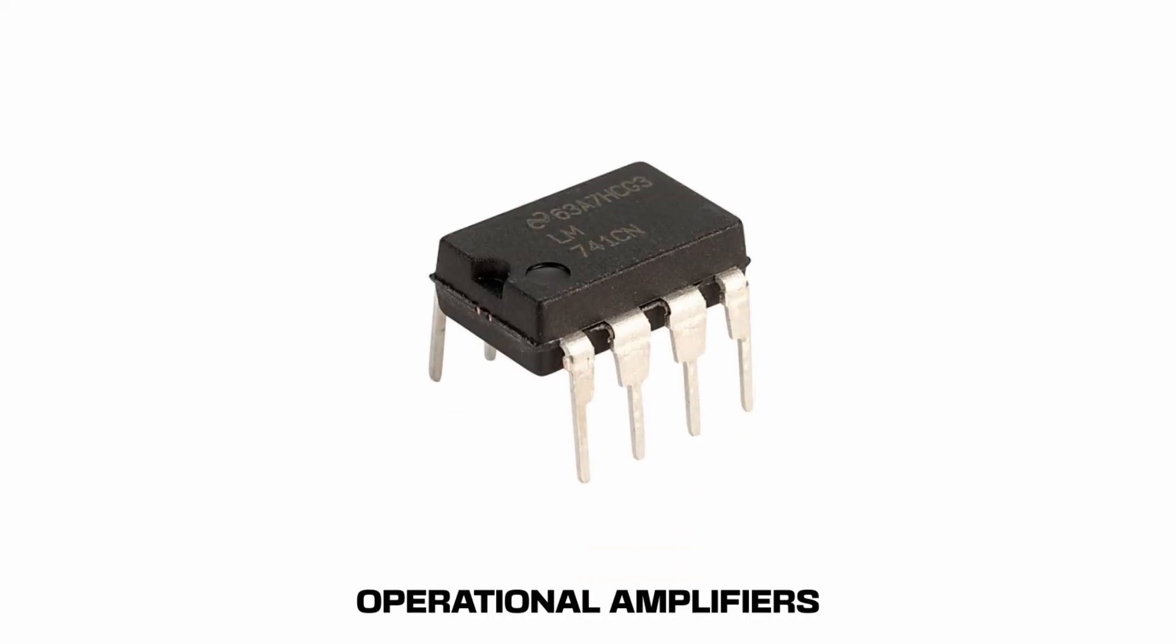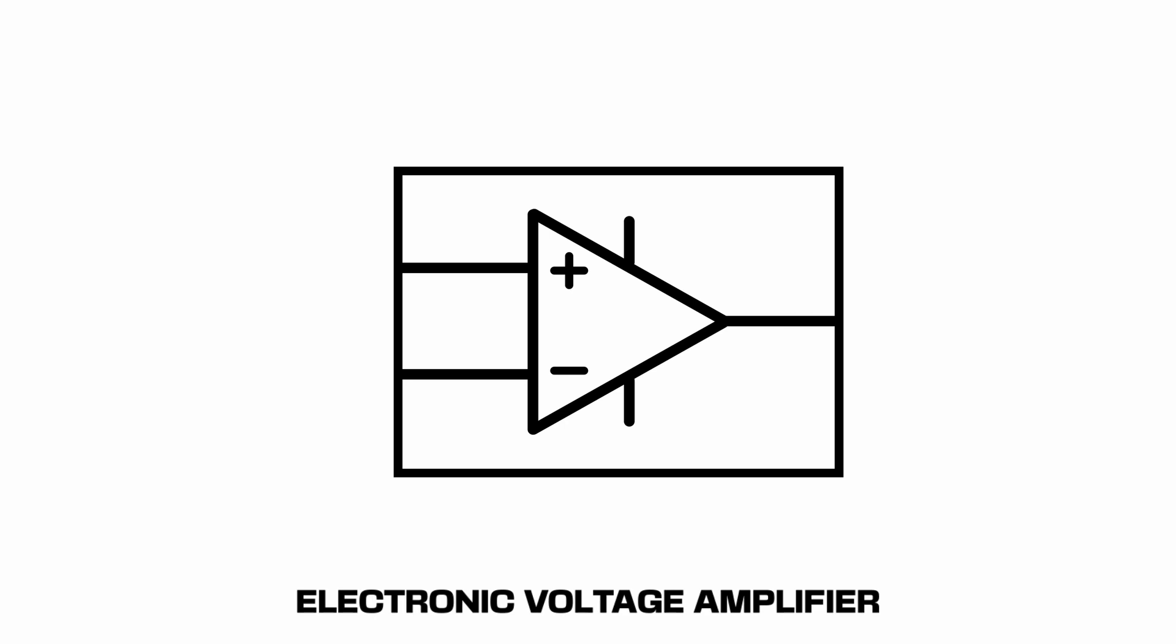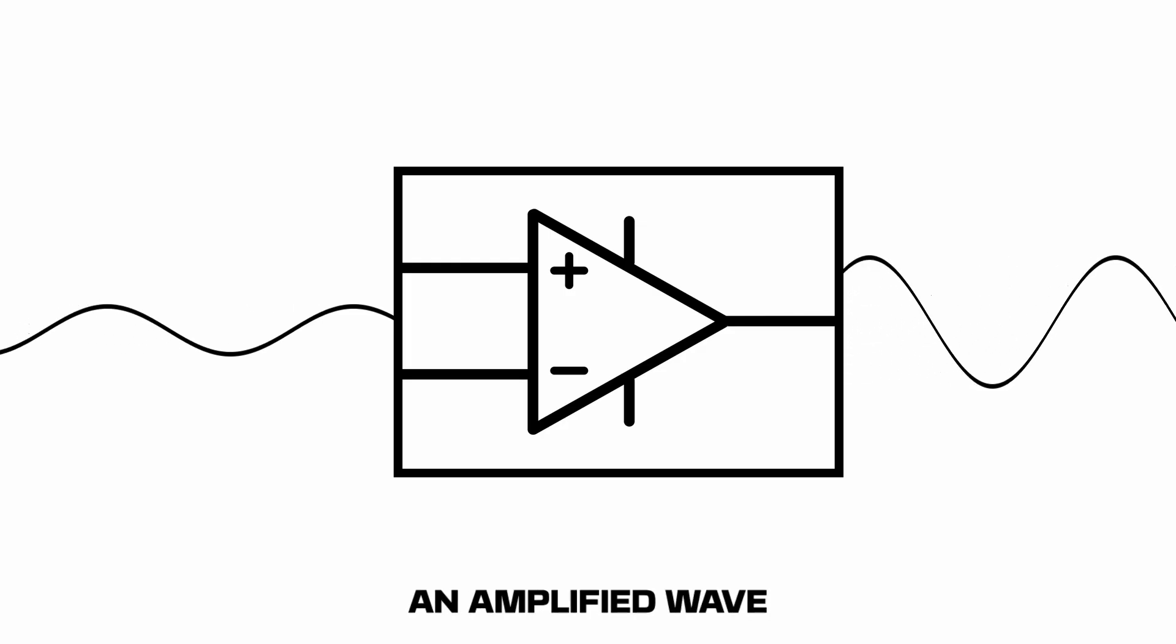Let's talk about operational amplifiers. An operational amplifier, or op-amp, is a high-gain electronic voltage amplifier. This means we usually put in a small voltage wave and we want to get out an amplified wave.